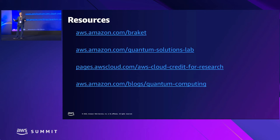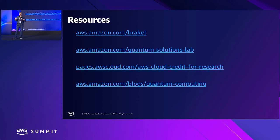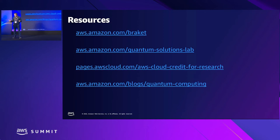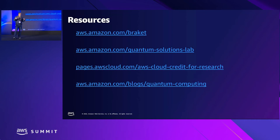Here are some resources: Amazon Braket, where you can see what the service does; the Amazon Quantum Solutions Lab, which engages customers in research projects; AWS cloud credits for research so you can try solutions on Amazon Braket; and our blog where we post articles on quantum computers, our research, and what our partners and customers are doing to innovate together with us in quantum computing.